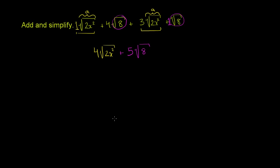Now let's see if we can simplify this any more. We have four of something and five of something else, so you can't just add these two things together. But maybe we can simplify a little bit. The principal root of 2x squared is the same thing as the principal root of 2 times the principal root of x squared. So I have 4 times the principal root of 2 times the principal root of x squared.